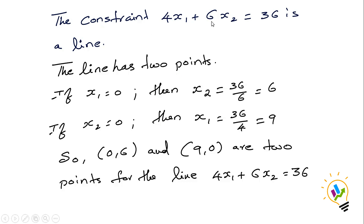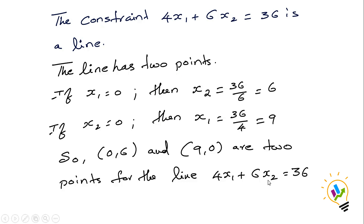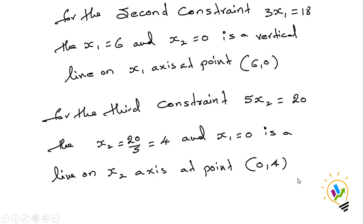For the line 4X1 plus 6X2 equal to 36, we need to find two points. If X1 equals 0, then X2 equals 36 divided by 6, which is 6. If X2 equals 0, then X1 equals 36 divided by 4, which is 9. So the two points are (0, 6) and (9, 0).